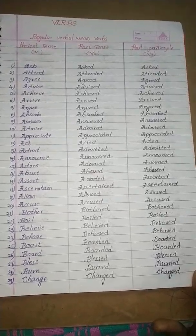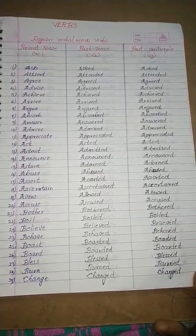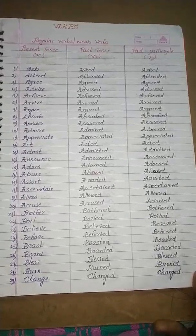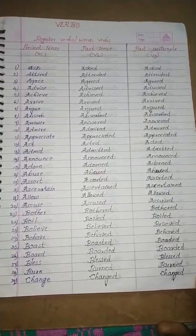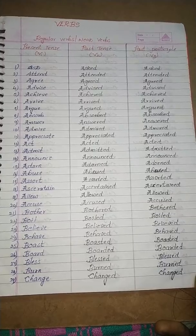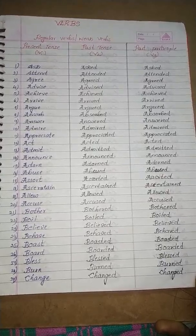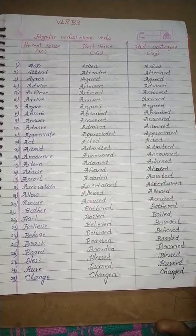In present tense and future tense, we generally use the same verb — V1. Whereas coming to the past tense, that will be different.